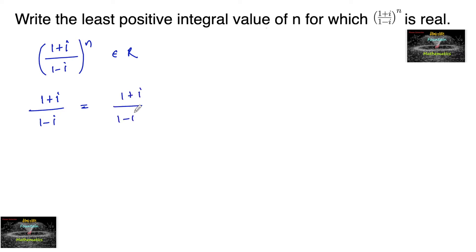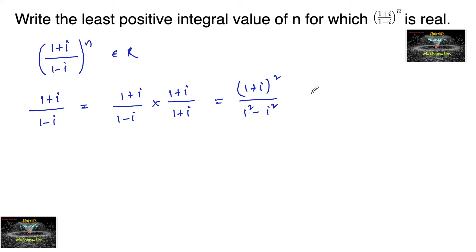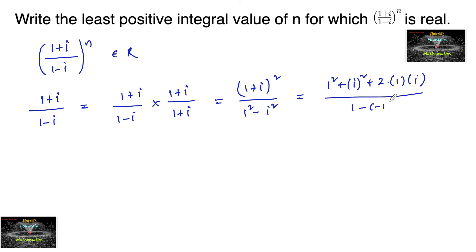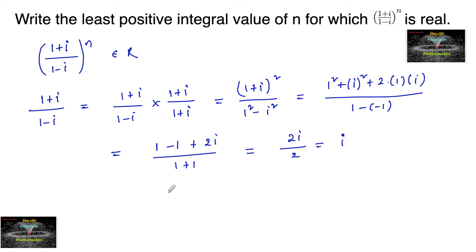We can write (1 plus i) upon (1 minus i), multiply and divide by its conjugate, that is (1 plus i) upon (1 plus i). This equals (1 plus i) whole square upon (1 plus i)(1 minus i), which is 1 squared minus i squared. Expanding: 1 squared plus i squared plus 2i, upon 1 minus of minus 1, which gives 2i upon 2, equal to i. So (1 plus i) upon (1 minus i) simplifies to i.